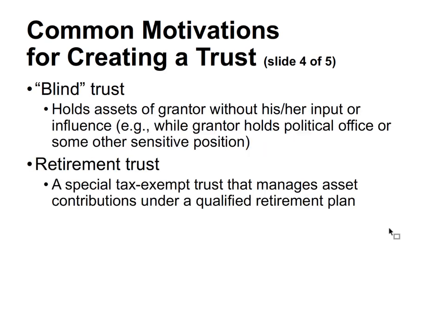A blind trust is where the assets are held and managed without the grantor's input or influence. An example is when the grantor holds political office or some other sensitive position where you can't have strings attached to any organization where you might be biased or have a conflict of interest.